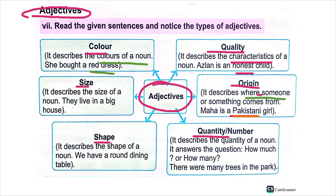Adjective of quantity: these describe the quantity of a noun — how much or how many. For example, 'there are many trees in the park.' Here 'many' describes the trees and is the adjective of quantity.